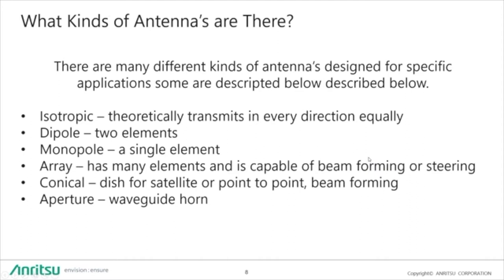There are many different types of antennas: isotropic, dipole, monopole, array, and phased array antennas, which are primarily used for beam forming. There are interesting advances in chipsets that can adjust the phase of the signal to create a beam — a lot of 5G technology uses this. Conical antennas are used in satellite and point-to-point applications and are also beam forming. And then we have aperture antennas, which are waveguide horn antennas.